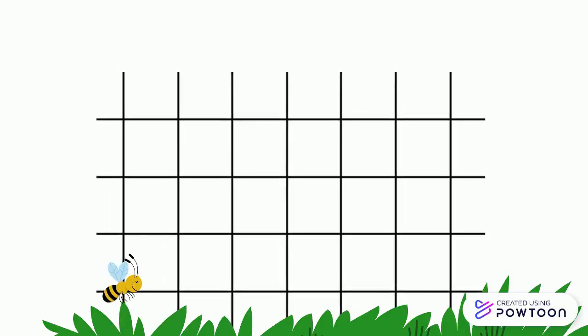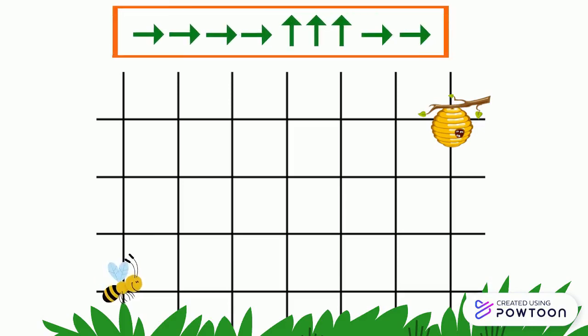We have a bee that must arrive to its hive. To trace its path on the grid, we need a code which tells us the path it will follow. This code is represented by arrows that tell us the path of the bee to arrive to its hive. The starting point is the place of the bee. The arrival point is the place of the hive.